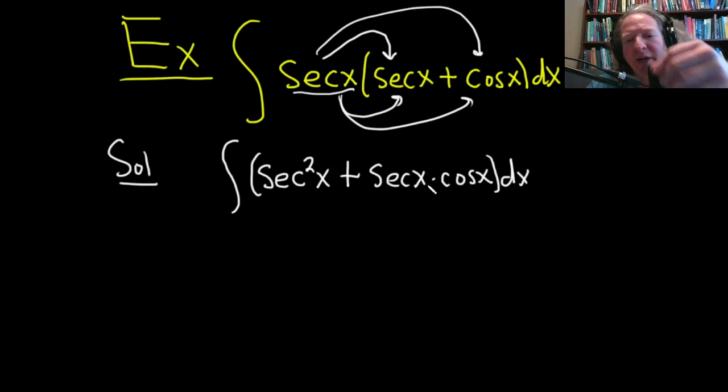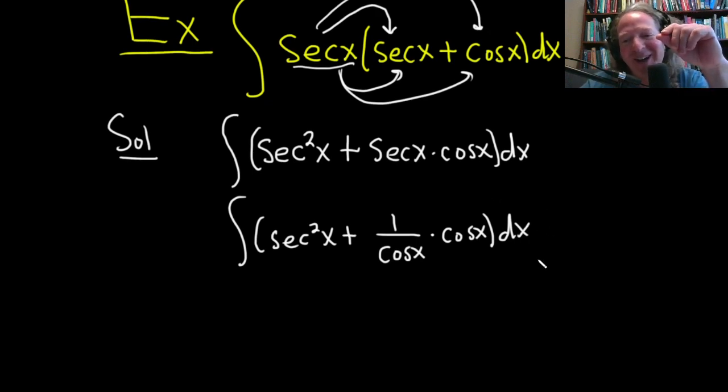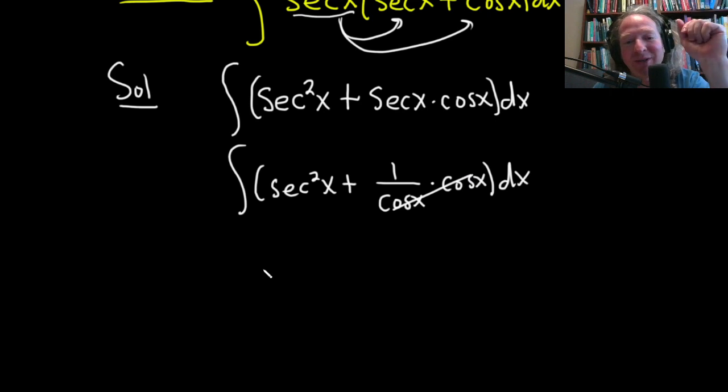But this secant cosine, there's not really a nice formula here, except you might recall, this is the key here, secant is really 1 over cosine. So this is 1 over cosine x times cosine x. So it works out really nice here, because they cancel, right? It's going to give you 1. So this is going to be the integral of secant squared x plus 1.